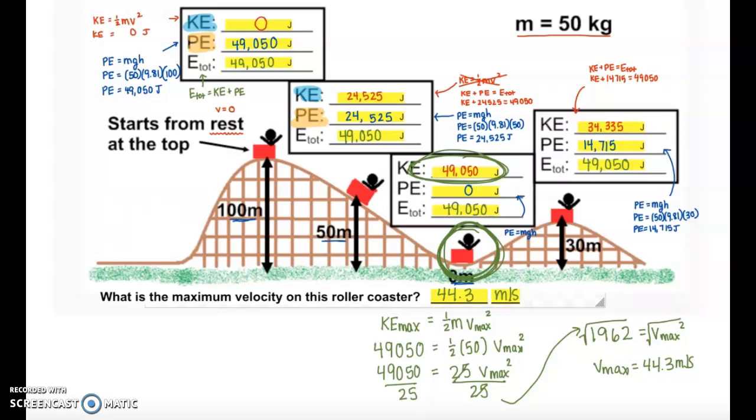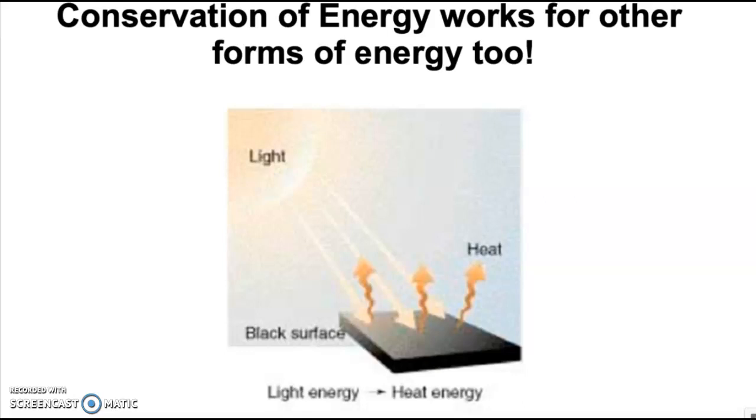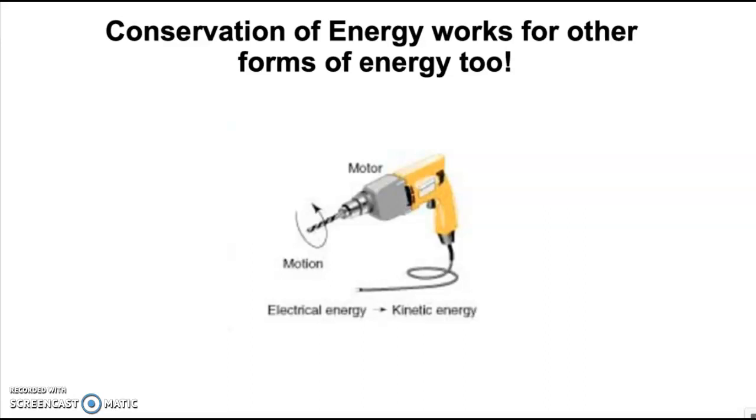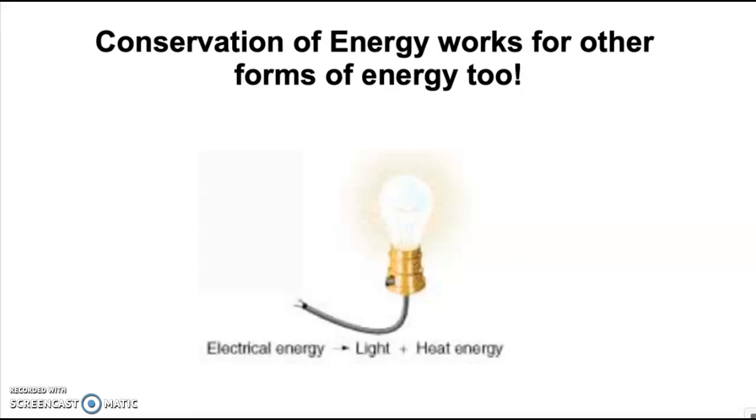Coming back to the presentation, I do want to highlight that, yes, our focus is roller coasters and energy conservation within roller coasters, but this idea of conservation of energy works for lots of different forms. For example, if light energy hits a black surface, it's going to be transformed into heat energy. Or if you think of an electric drill, you're converting electrical energy into the kinetic energy of the drill rotating. Or even just a light bulb—you take the electrical energy from the outlet, and that's being converted into light and heat energy. So the idea of constant energy, but something that's changing between forms, can be applied to lots of different things in our everyday lives.